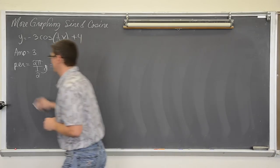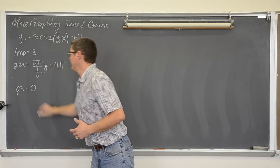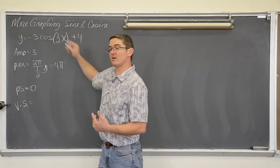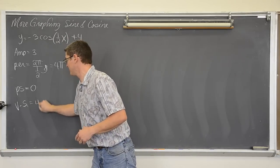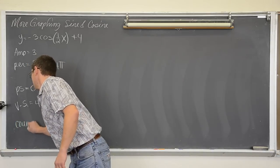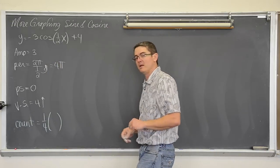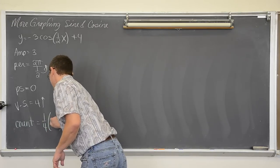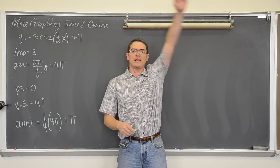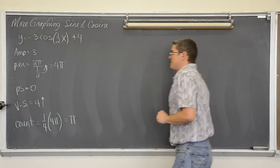Phase shift: there is no plus or minus in the parenthesis, so it is zero. The vertical shift is the constant at the end, not inside the trig function, so it is up 4. We are going to count by a quarter of the period. The period is 4π, so we count by one quarter of 4π, which is π. We count by a quarter of the period to get those quadrantal angles and the easy values of zero, one, and negative one. T-table: x and y equals negative 3 cosine of one half x, plus 4.